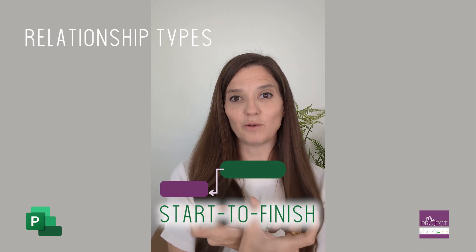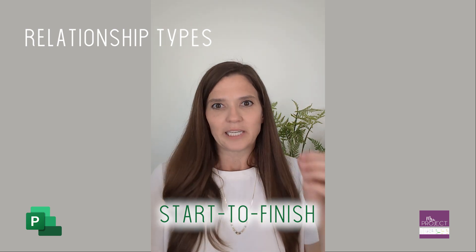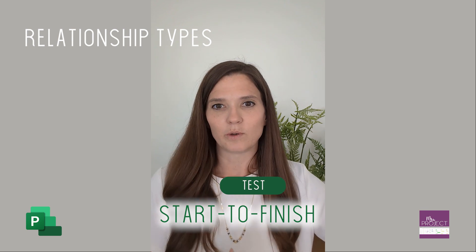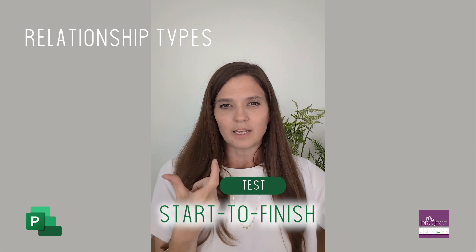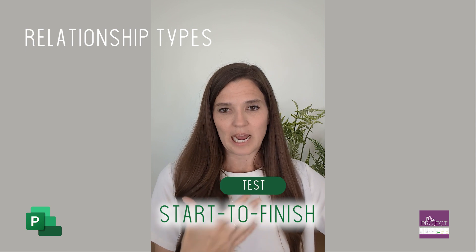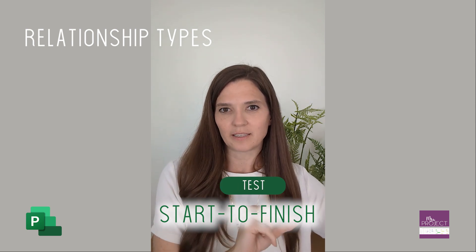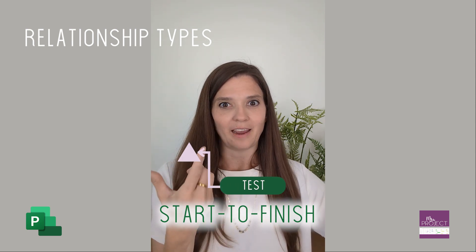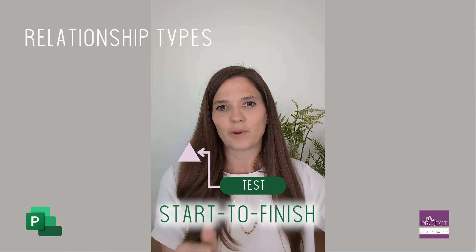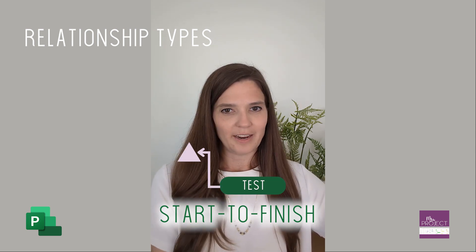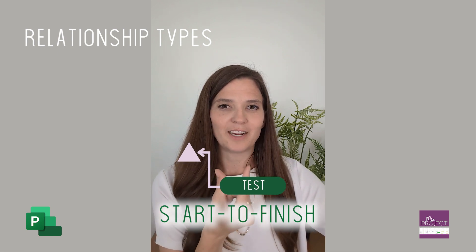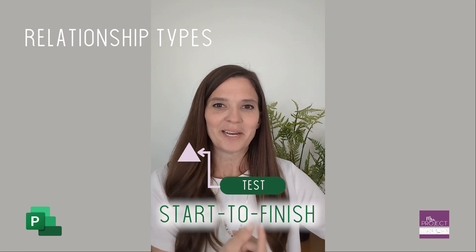Start-to-finish can be used with backwards planning. In the engineering world, you have test readiness reviews that have to happen a certain number of days prior to the test. You plan backwards — three years out or one year out you have to do this, 180 days out you have to do this. That's a backwards plan and you would use the start-to-finish relationship for that.